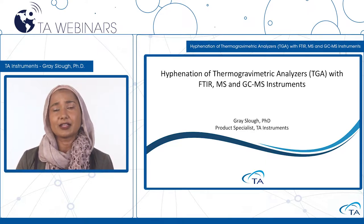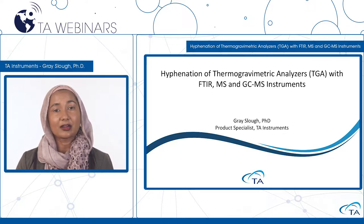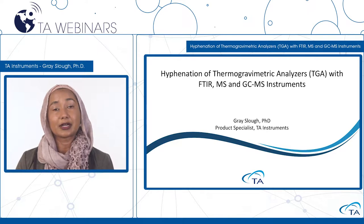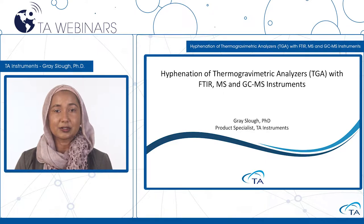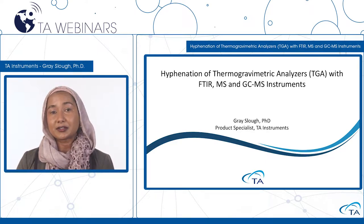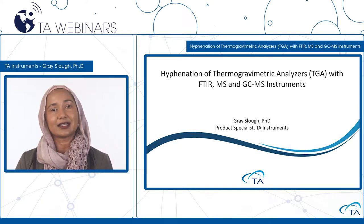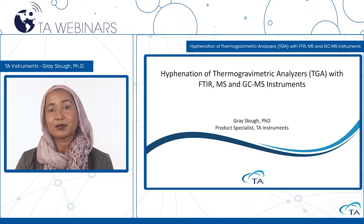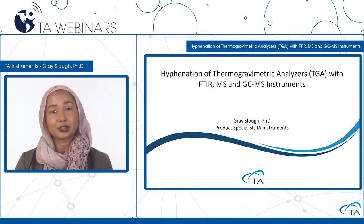Do you need to know if there is residual solvent in your material? TGA hyphenated with FTIR or mass spectrometry can resolve whether that volatile content is water vapor or an organic solvent. Do you need to understand the degradation pathways of a material as it is heated ballistically, or to determine if degradation products are being created as a high-performing plastic is held at its continuous service temperature? Combining the TGA with spectroscopy is a powerful approach in providing insights into materials characterization.